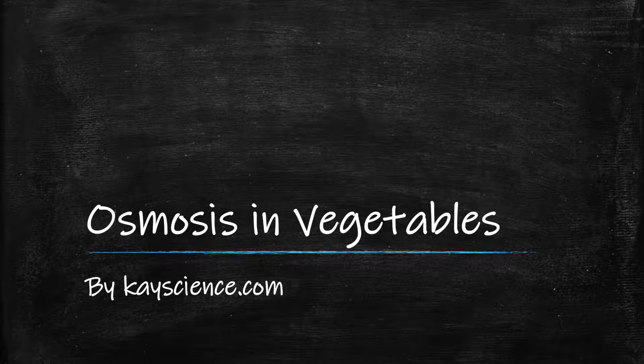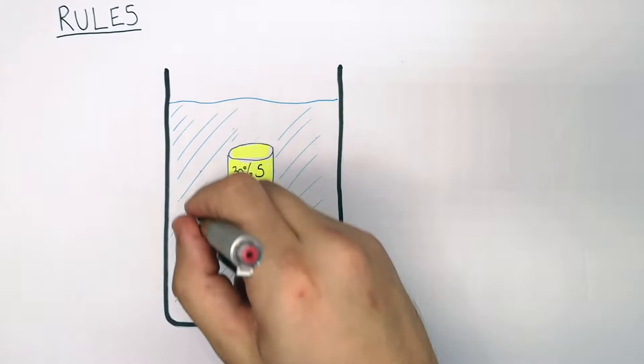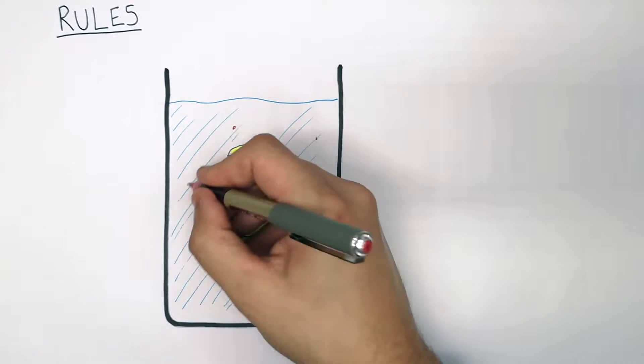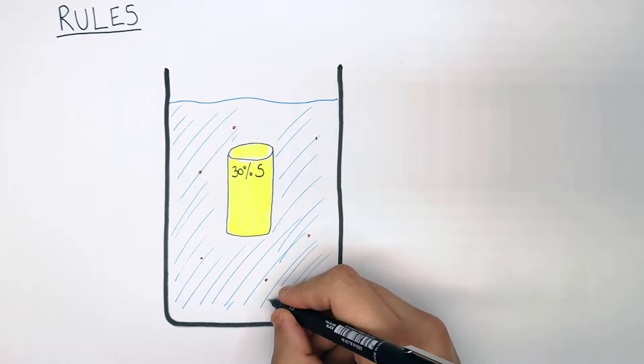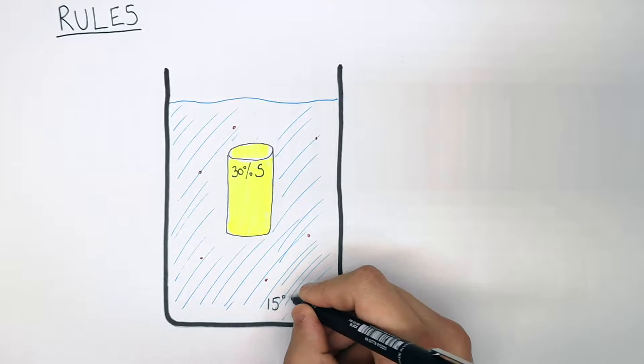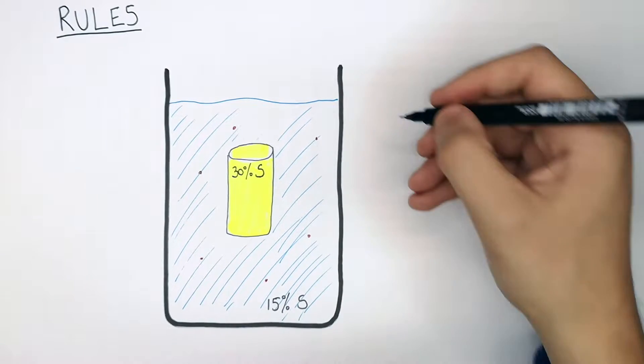Osmosis in Vegetables by kscience.com. So what I'm doing here now is adding solute, so sugar or salt, to the beaker. So in this case it's 15% sugar concentration that the potato is in.